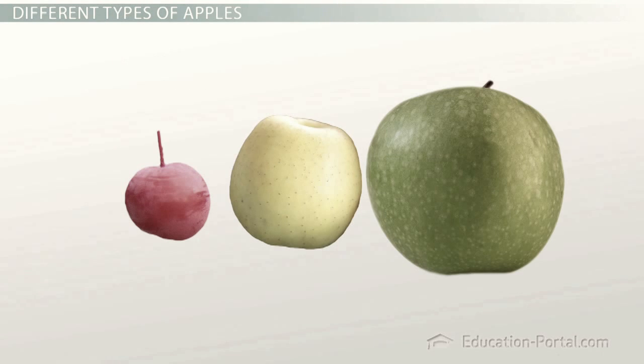Whereas the golden delicious is medium sized, yellowish in color, tastes sweet, and we're going to give this a mass of 2 AMU. Finally, the granny smith is large, green, and tastes sour. We will give this apple a mass of 3 AMU, so it weighs three times as much as the crab apple.